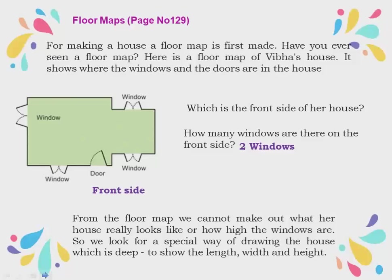So we look for a special way of drawing the house which is deep, to show the length, width, and height. Like 2D and 3D shapes — the floor map is two-dimensional, but the deep drawing of the house is three-dimensional. In a 2D floor map we cannot see the height of the house or windows. The special way of drawing shows how deep it is — what is the length, width, and height.